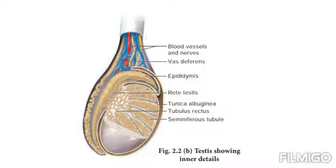Spermatogonic cells divide mitotically and differentiate to produce spermatozoa. So, seminiferous tubules are made up of two types of cells — Sertoli cells, which provide nourishment to the developing sperms, and spermatogonic cells, which divide mitotically and differentiate to produce spermatozoa.